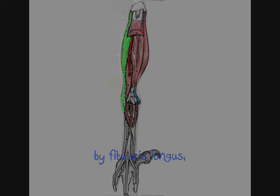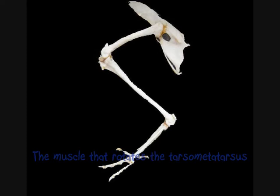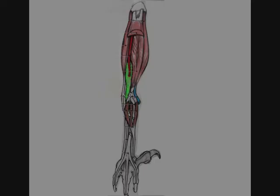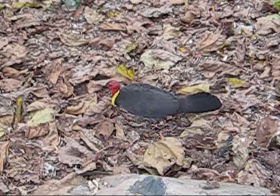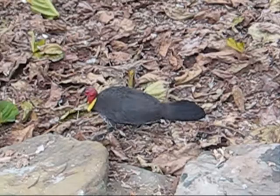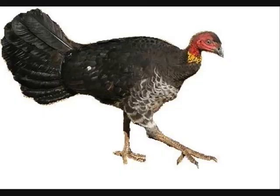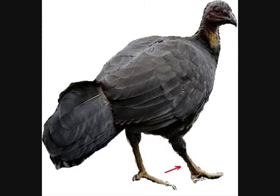The hock is then extended by fibularis longus and one with many parts called gastrocnemius. The muscle that rotates the tarsometatarsus is called the fibularis brevis. These are the muscles of a bird's hind limb. They flex, extend, abduct, adduct, and rotate the hind limb.